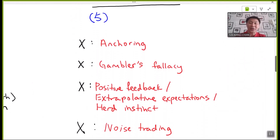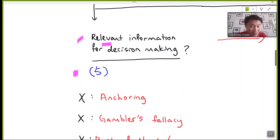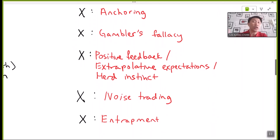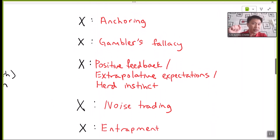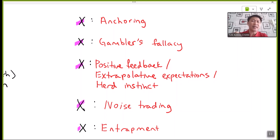There are five main types of behavior that disturb the usage of relevant information in decision making: anchoring, gambler fallacy, positive feedback, noise trading, and trackback. You should spend time reading the study hub and technical article for full explanations. Let's look at two examples from these five.